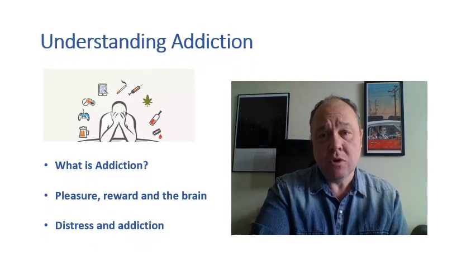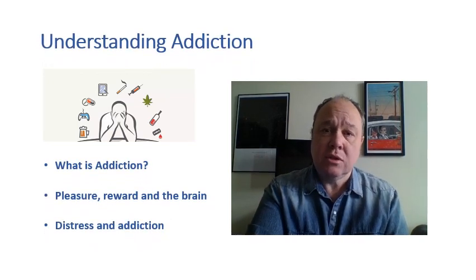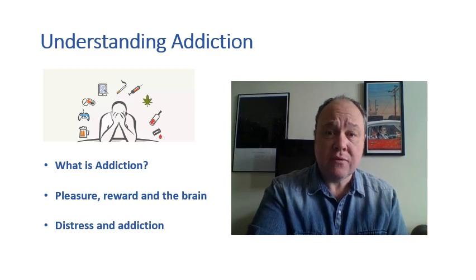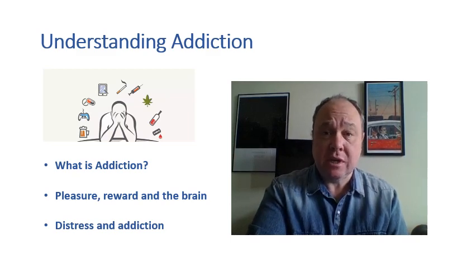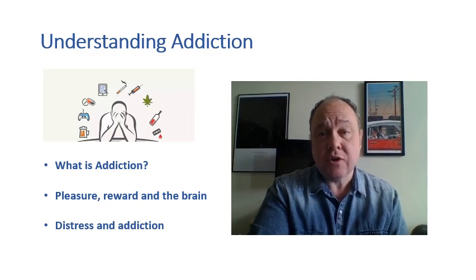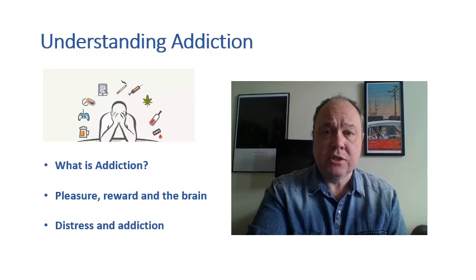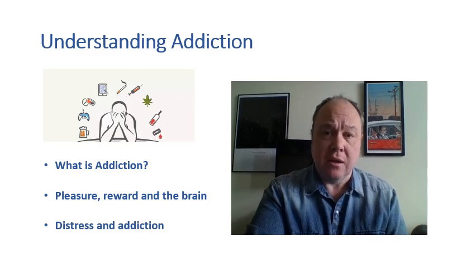We're going to look briefly at what addiction is, we're going to look at the role of the central nervous system — in particular the brain — in addiction, and then finally I want to talk about distress and the possibility that the best way of understanding addictions and treating them is to look at the underlying causes.